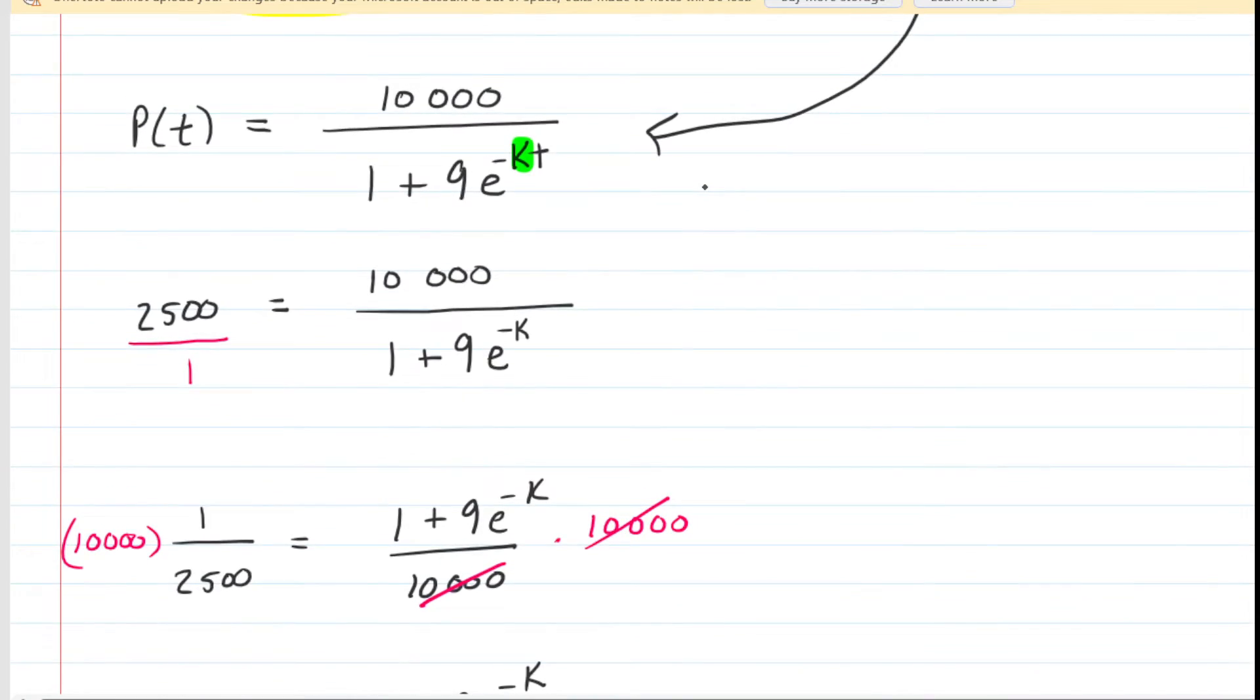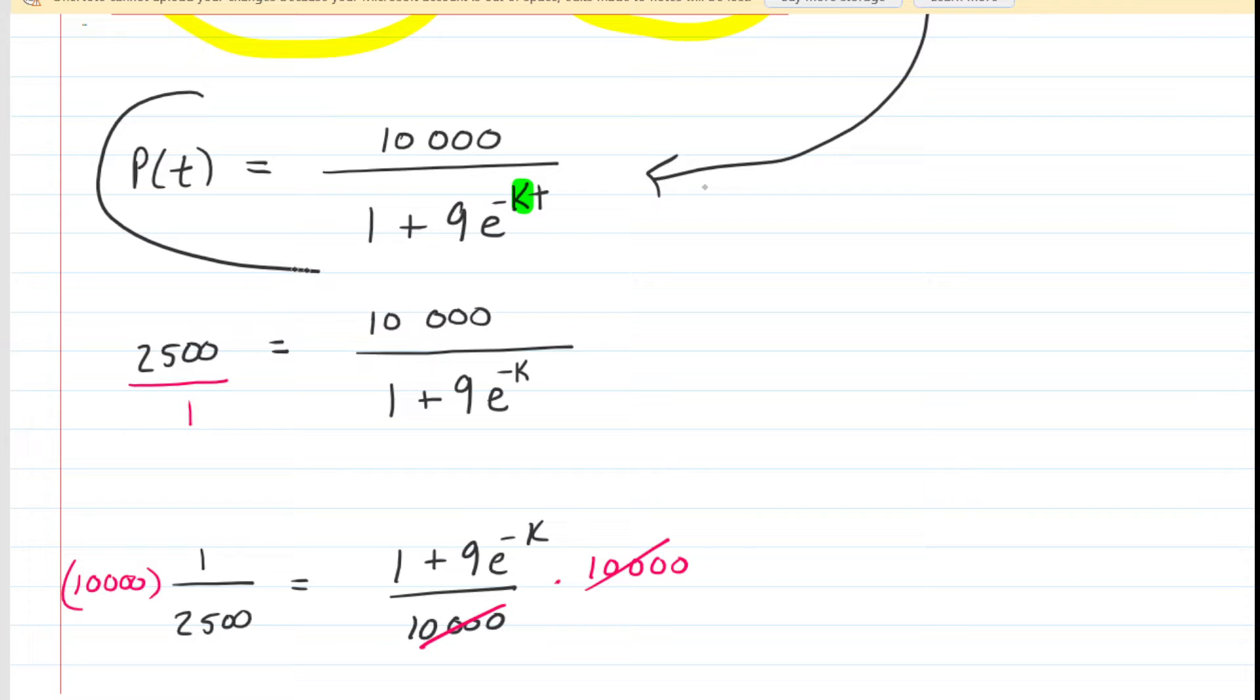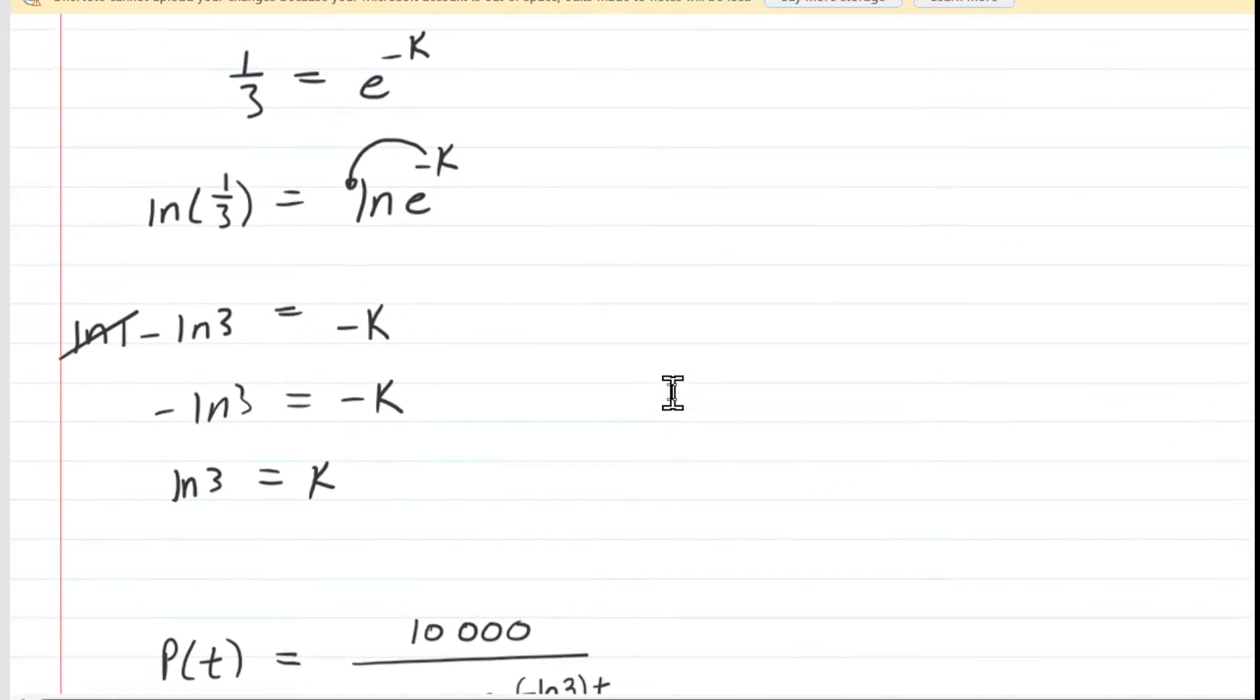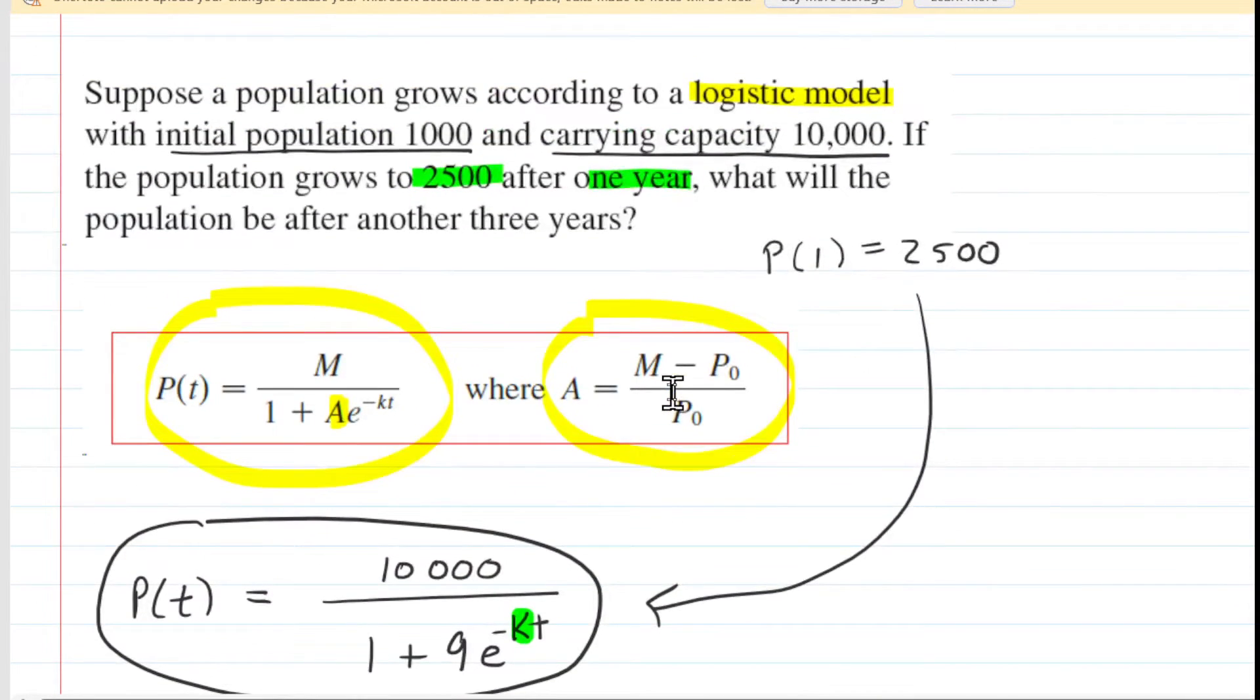Now that we have the value of K equaling the natural log of 3, we're going to plug the natural log of 3 in for K into this logistic equation. So at this stage, we've basically completed our logistic model. Now we just have to answer the very specific question, which is, what will the population be after another 3 years?